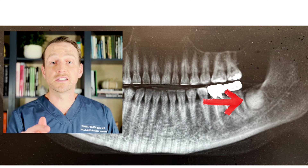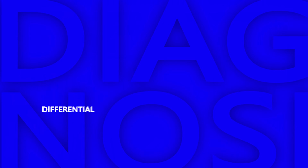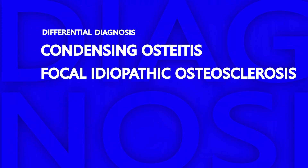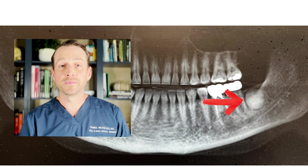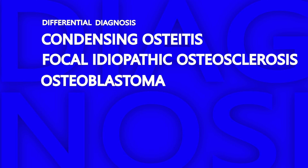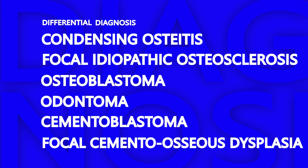Examples of benign radio-opaque findings include condensing osteitis and focal idiopathic osteosclerosis. For this lesion — a well-defined, radio-opaque lesion in the left mandible where there was a previous tooth and impacted third molar — both are reasonable differential diagnoses given the extraction history. But additional lesions on the differential include osteoblastoma, odontoma, cementoblastoma, and focal cementoosseous dysplasia.